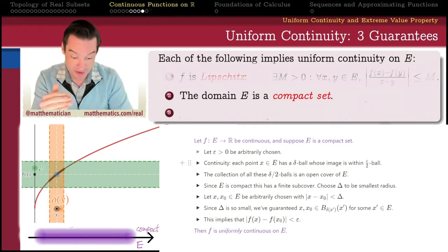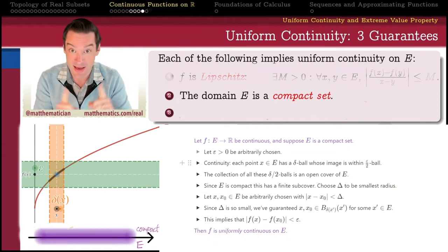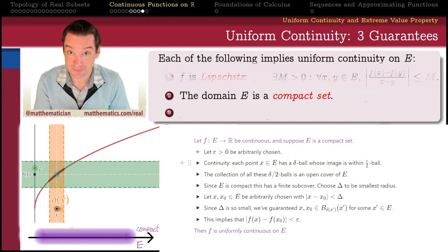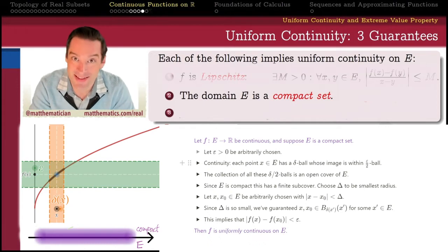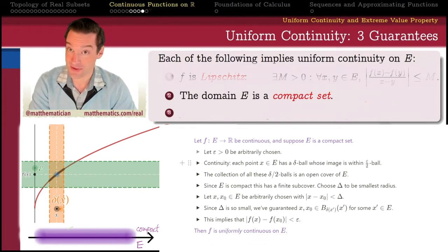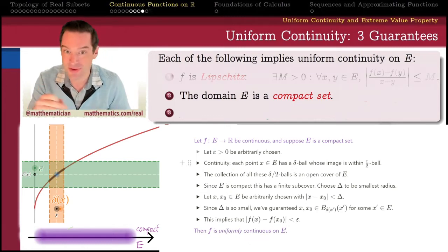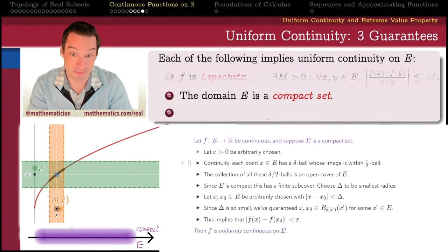This capital delta will force points that are capital delta close to have images that are epsilon close. The rest of the argument is just filling in those details: how do we know that if x and x naught are capital delta close, their images will be epsilon close? That's the overall overview of the proof. If you're satisfied that this argument generally makes sense, maybe you can skip to the next video, but if you want the gory details, let's get into them.